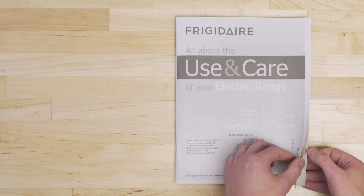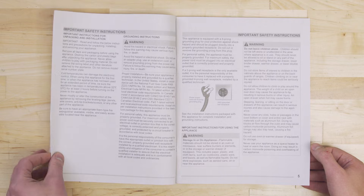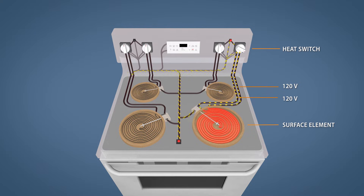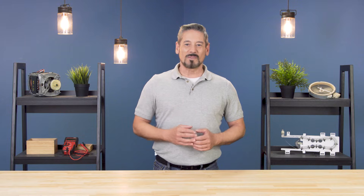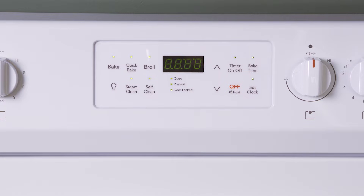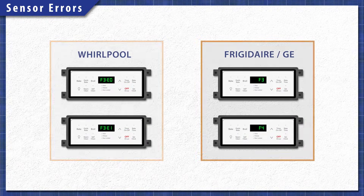If you're unsure, check your oven manual. However, there aren't any codes for the stove elements, as they are on a separate circuit and aren't connected to the control board. In this episode we'll learn about the most common error codes in Whirlpool, Frigidaire, General Electric, and Samsung models. Let's get started.